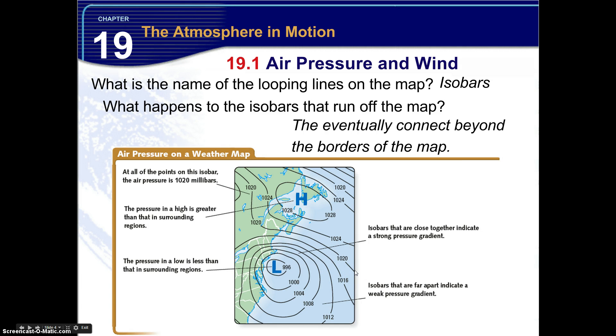Now pressure in the high is greater than in surrounding regions. So we see 1020, 1024, 1028, we increase in our air pressure, and then we have a high system right here.